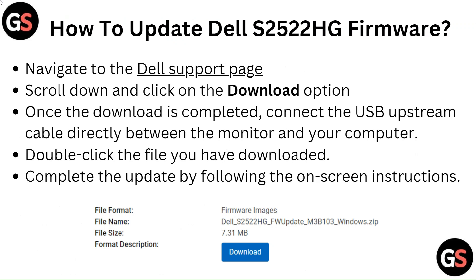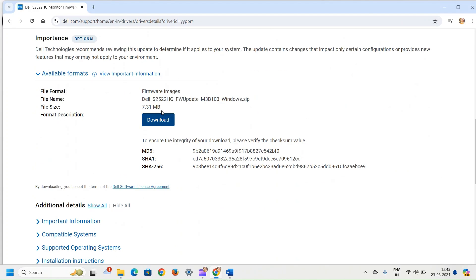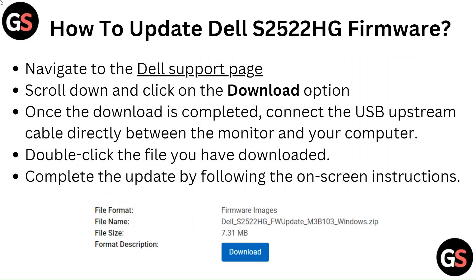How to Update Dell S2522HG Firmware: Navigate to the Dell Support page. Scroll down and click on the Download option. Once the download is completed, connect the USB upstream cable directly between the monitor and your computer. Double-click the file you have downloaded, then complete the update by following the on-screen instructions.